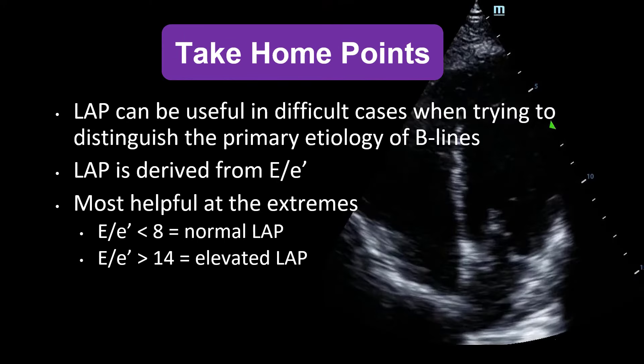Let's go over some take-home points. Left atrial pressure can be useful in difficult cases when trying to distinguish the primary etiology of B lines, especially when pleural line thickness is difficult to interpret. LAP is derived from E over E-prime and is particularly helpful at its extremes: E over E-prime less than 8 means normal left atrial pressure, and E over E-prime greater than 14 means elevated left atrial pressure. Thank you very much for listening. We hope you found this helpful. Happy scanning.